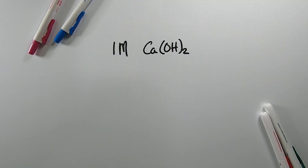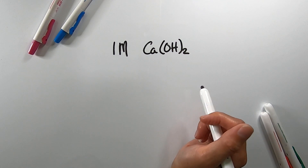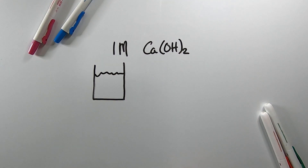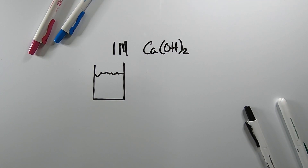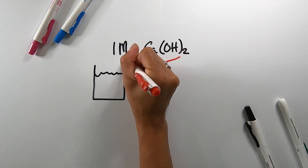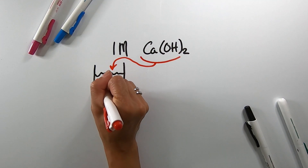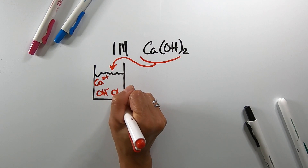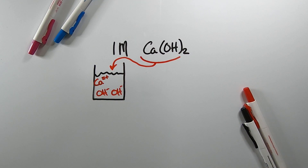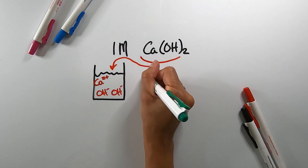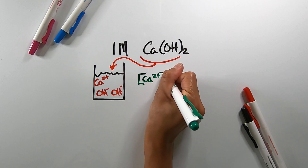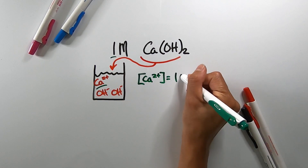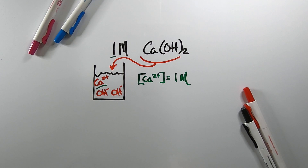Now suppose I have a 1 molar solution of calcium hydroxide. I'm going to draw my beaker, add some water, and take one molecule of calcium hydroxide and dissolve it in the water to release one calcium ion and two hydroxide ions. If I were asked for the concentration of calcium ion in solution, there's one calcium ion times one molar solution, which is one molar calcium ion concentration in solution.